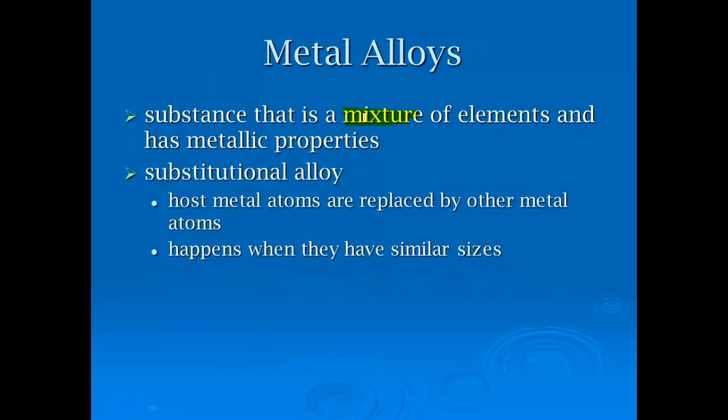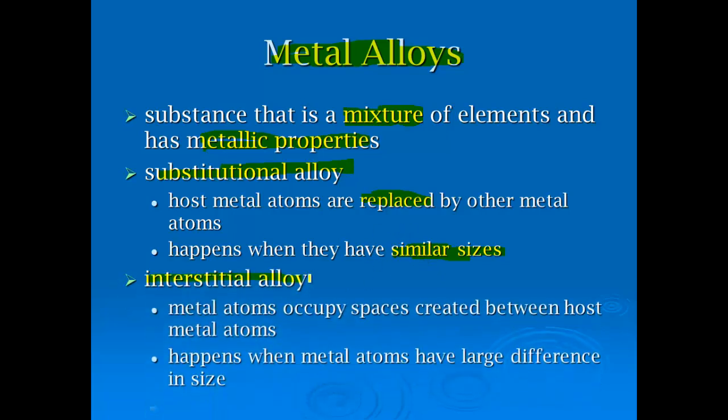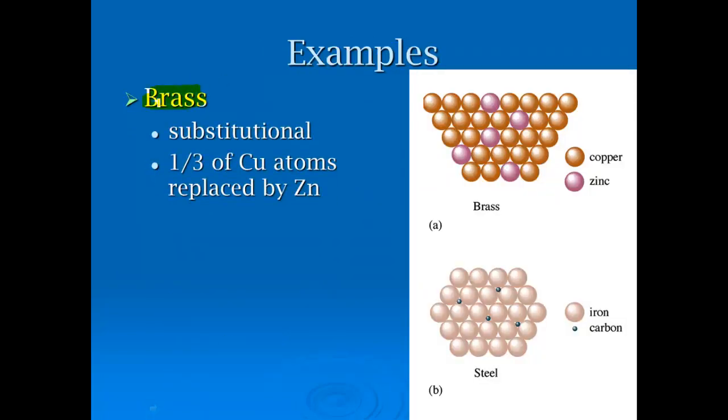Now, alloys are really a mixture of elements. We're not creating a brand new chemical. We're mixing metal elements that have metallic properties, and there's two types here. You've got substitutional alloy, where host metal atoms are actually replaced. This happens when they have similar sizes, where you're literally taking something out, putting something back in, and we're going to see on the next slide that steel is a good example of this. As opposed to an interstitial alloy, where smaller metal atoms will occupy spaces. This is when the metal atoms have a big difference in size. So some common metals that we're used to, brass is substitutional, and usually about a third of the copper atoms are replaced by zinc. There's a few other metals that can be used as well, but you can see that zinc takes the place, and it just makes it stronger. That was a big thing with brass.